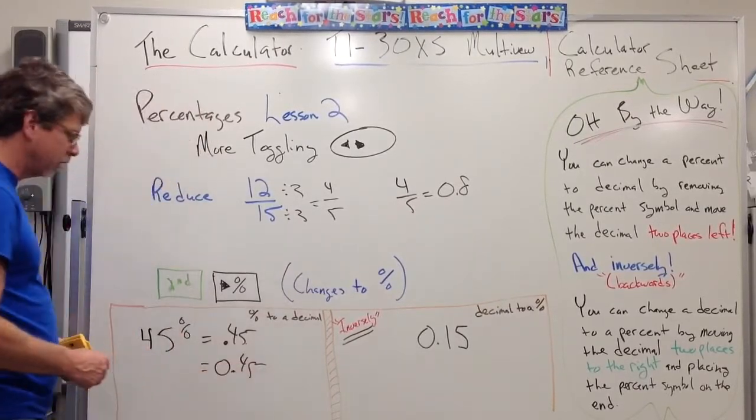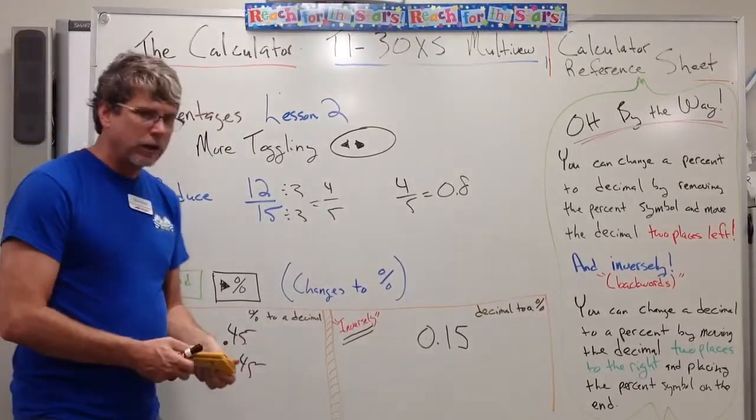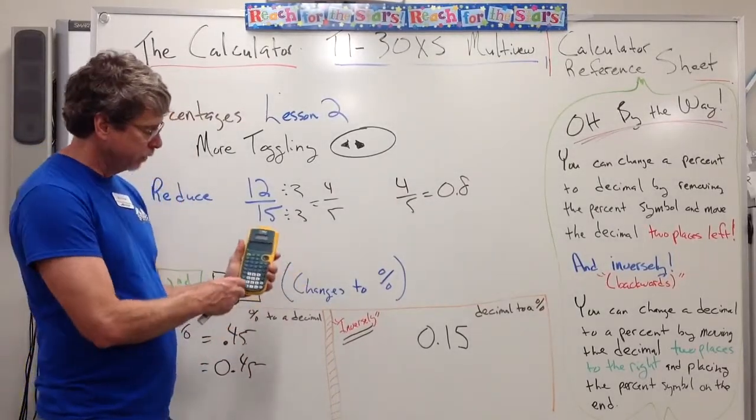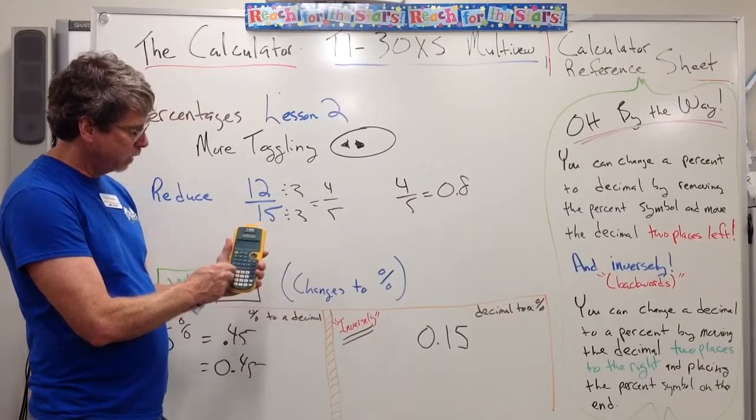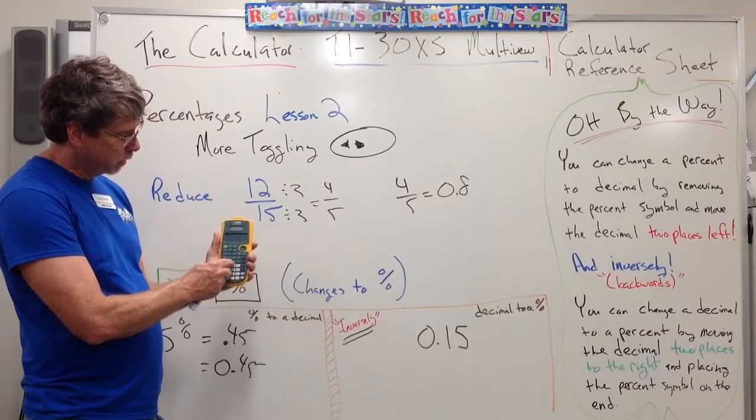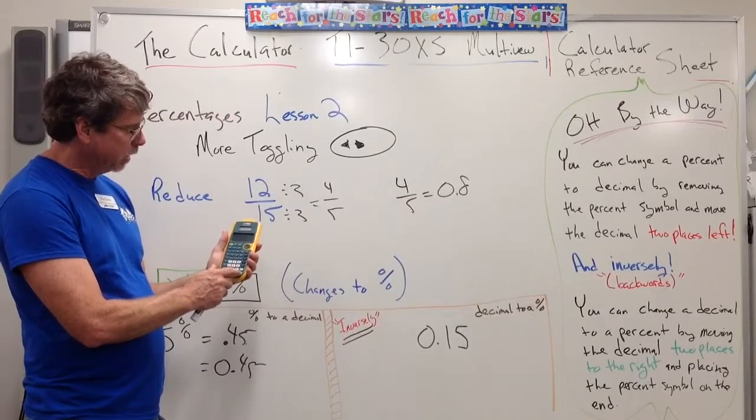A lot of times, that's what the calculator would do. Now, you can just type in 45% into the calculator, and it will do it for you. So remember, I just type in 45. And remember, percent's a green guy, so we have to hit the second button, and then the percent, hit enter.